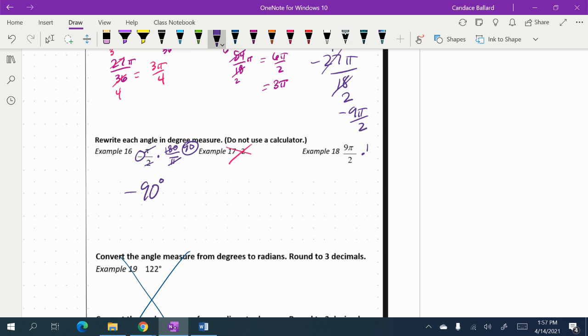On 18, again, I'm going to multiply by 180 over pi, because the trick is when we're going to degrees, we want to get rid of the pi's. So the only way to do that is put it in the denominator. And again, 2 goes into 180 90 times. And then 9 times 90 would be 810 degrees.